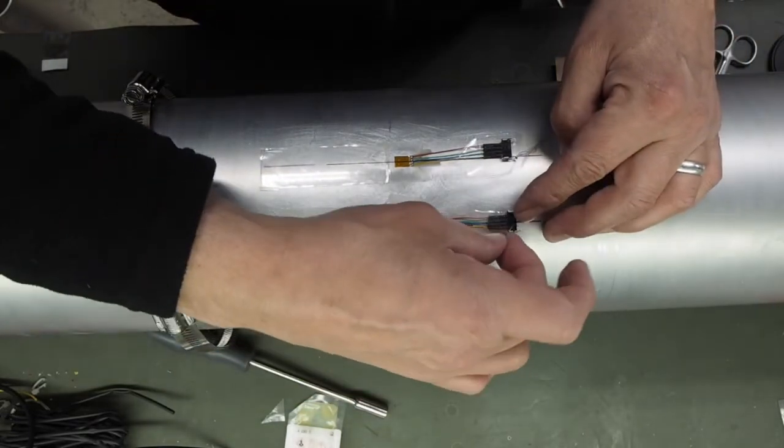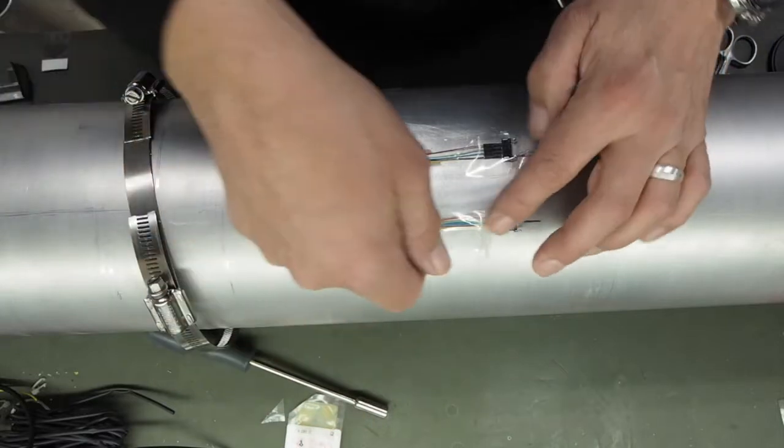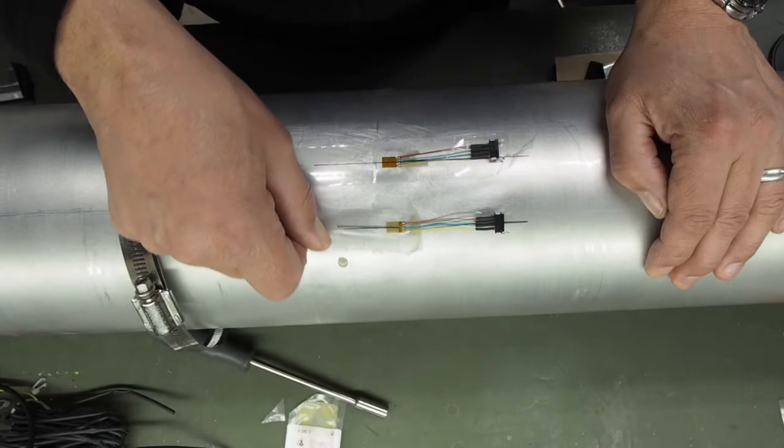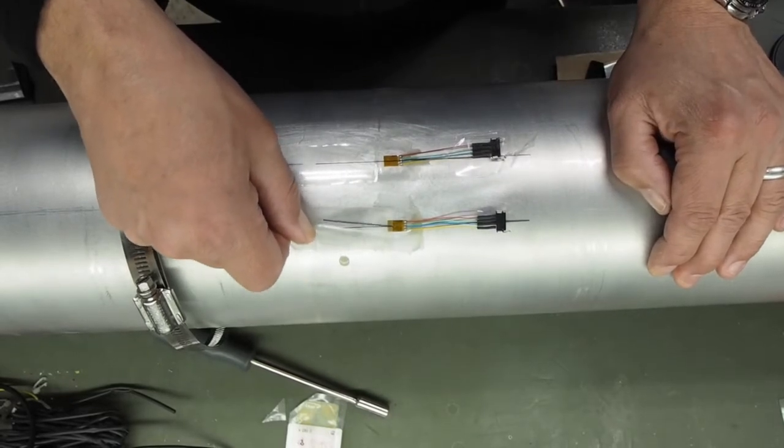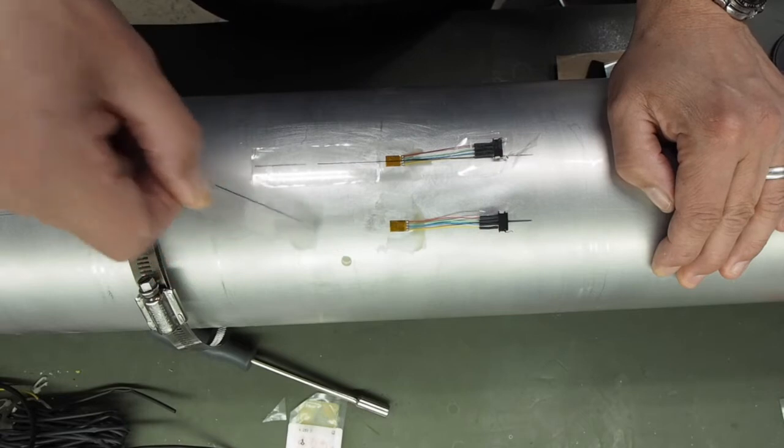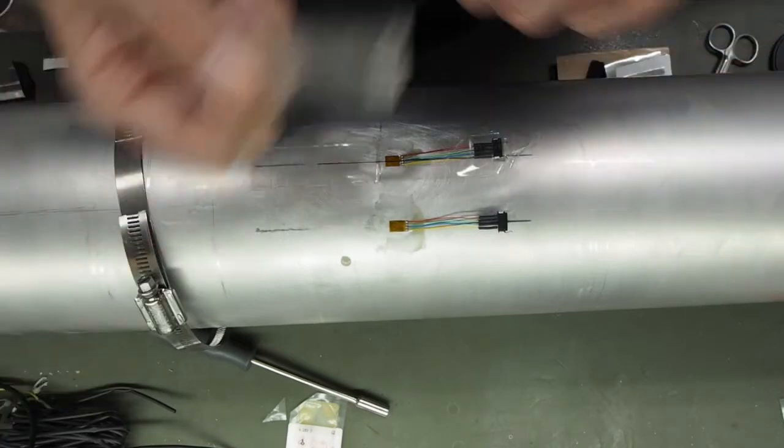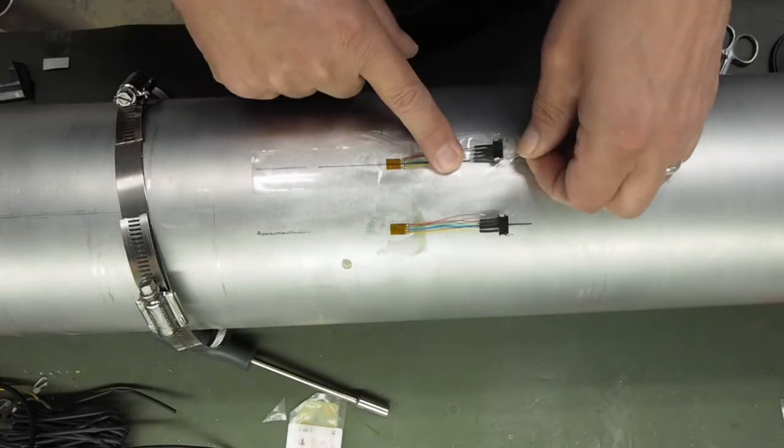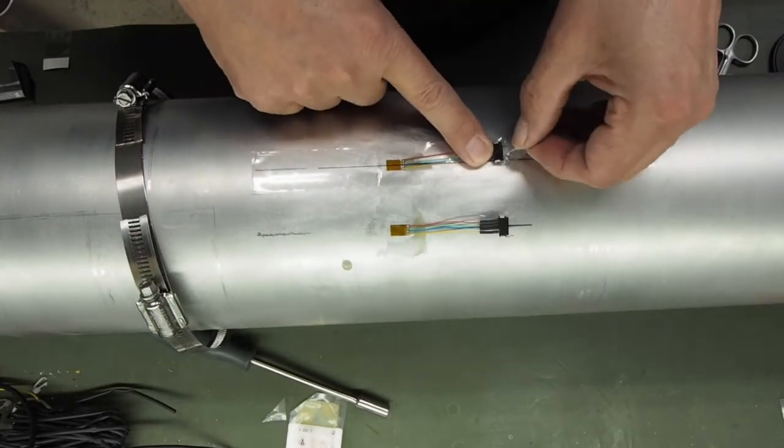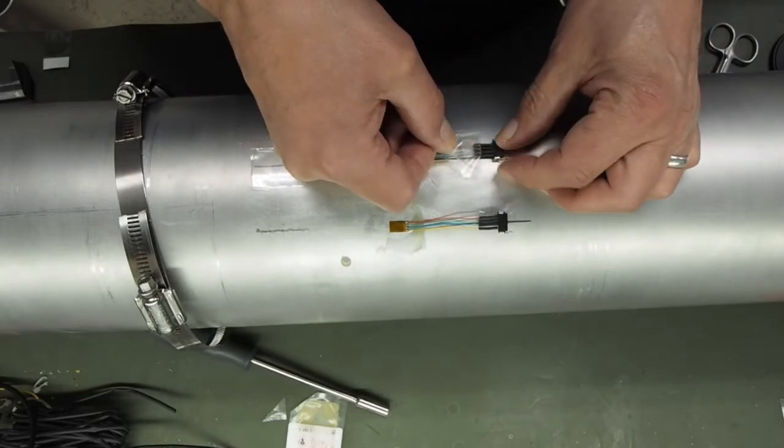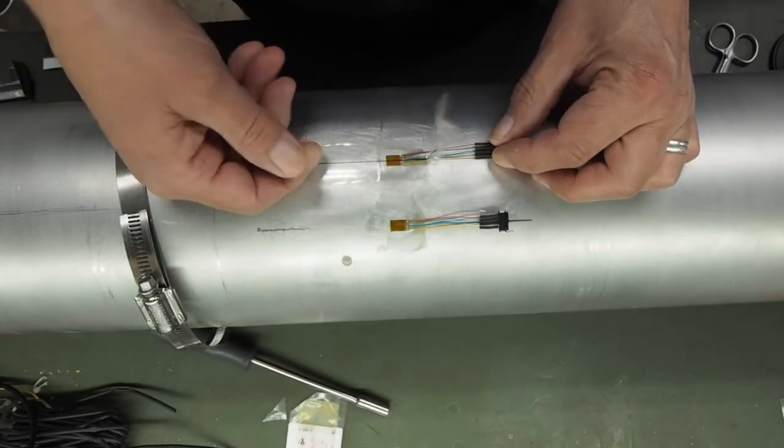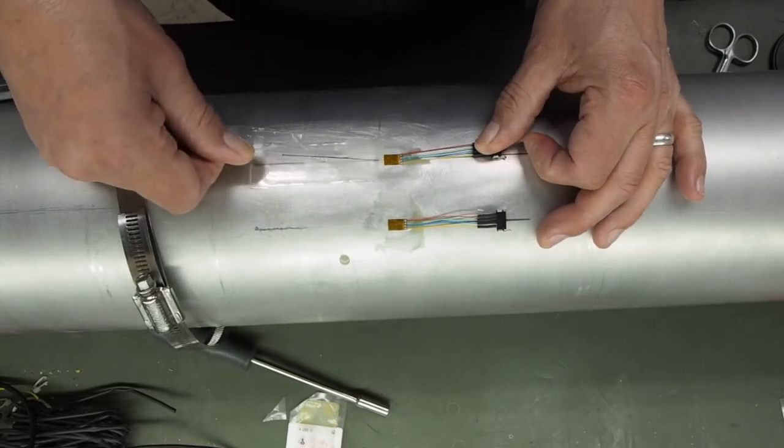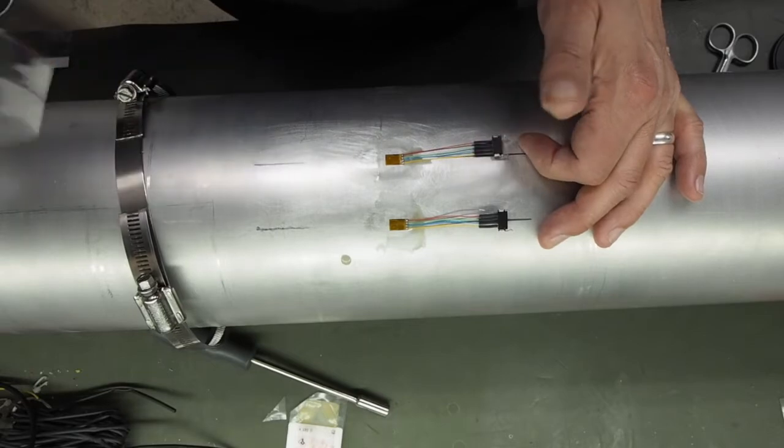To take this off we want to fold it back on itself. Once we've passed the gauge then we can just take it off normally, just to stop any chance of damaging the gauge as it's coming off. And again here just hold the connector. Exactly the same. Tape's off.